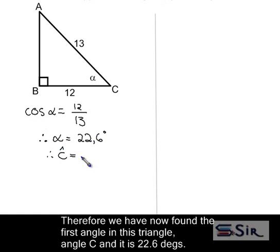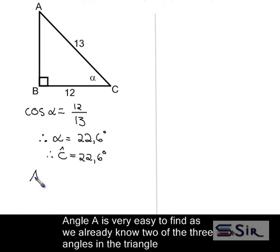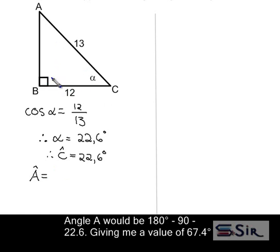Therefore, we have now found the first angle in this triangle, angle C, and it is 22.6 degrees. Angle A is very easy to find, as we already know two of the three angles in the triangle. So angle A would be 180 degrees minus 90 degrees minus 22.6 degrees, giving me a value of 67.4 degrees.